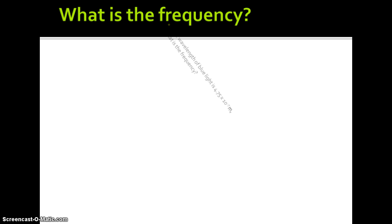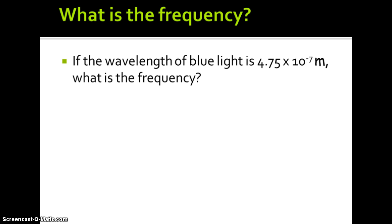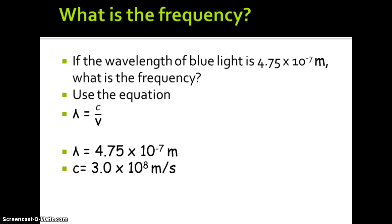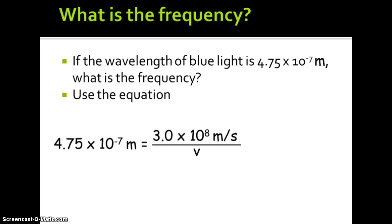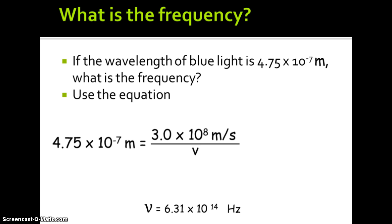What is the frequency if the wavelength of blue light is 4.75 times 10 to the minus 7th meters? The wavelength equals the speed of light divided by the frequency. Let's plug in what we know: 4.75 times 10 to the minus 7th meters, and the speed of light is 3.0 times 10 to the 8th meters per second. When we solve for the frequency, we get 6.31 times 10 to the 14th hertz.